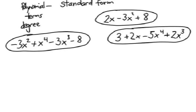We have a negative 3x squared term, an x to the 4th term, a negative 3x to the 3rd term, and a negative 8. That's a four term polynomial.